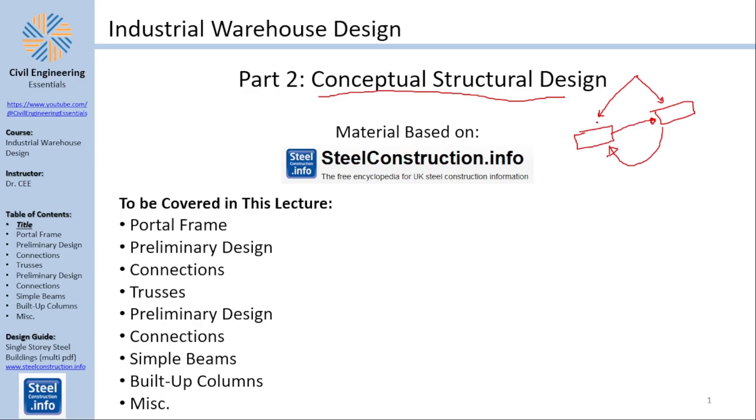I hope that this new style of video series should be helpful for you because there is so much to unpack in terms of theory and the simple paint as I was doing before will not actually do this topic justice. So today we're going to talk about part two of our multi-part industrial warehouse design video series and today we're going to talk about conceptual structural design. Once again, the material is based on the single story steel buildings design guide by the steel construction info. This is free to be downloaded, google it, you will find it very beneficial.